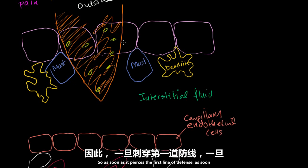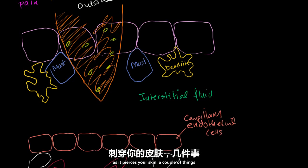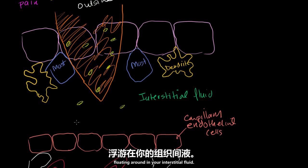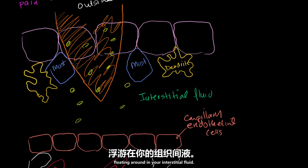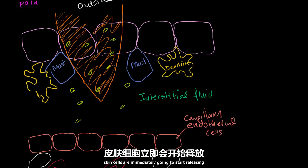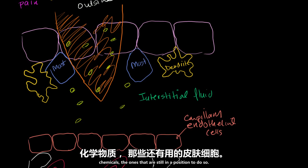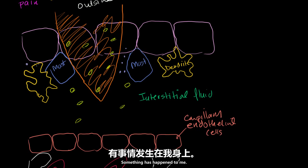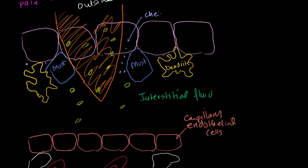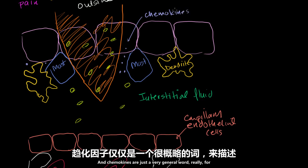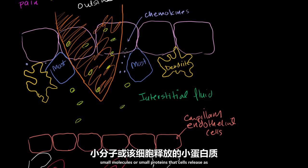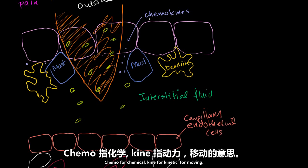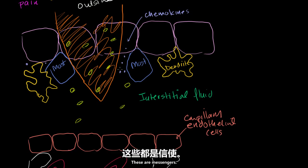As soon as it pierces your skin — the first line of defense — a couple of things are going to happen. A lot of these bacteria are immediately going to start floating around in your interstitial fluid. The cells it came in contact with probably got killed. It's also going to damage some of these skin cells. Those skin cells are immediately going to start releasing chemicals — chemical messengers that move through the interstitial fluid locally and say something has happened. These are called chemokines — small proteins that cells release as a signaling mechanism. Chemo for chemical, kine for kinetic — these are messengers.